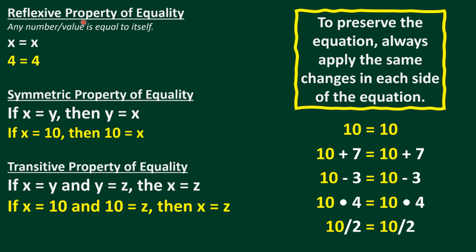Reflexive property of equality: any value or number is equal to itself. For example, x equals x, or 4 equals 4. The left and right sides are equal — that is called the reflexive property of equality.